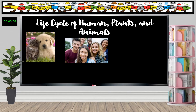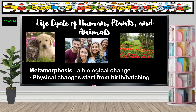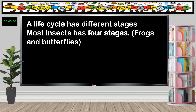Humans, plants, and animals undergo physical changes which started from birth or hatching. This is called metamorphosis, or a biological change, which means we do not exactly look like what we are when young compared to when we grow old. A life cycle has different stages.